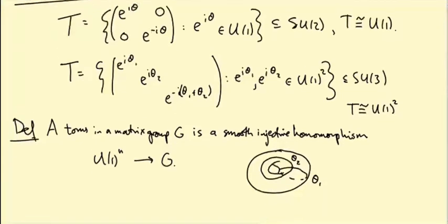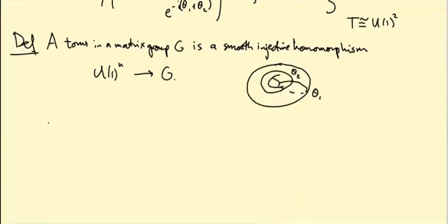One more part of the definition: a torus is called maximal if it's not contained in any larger torus.